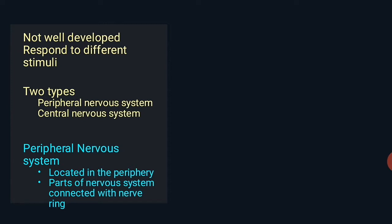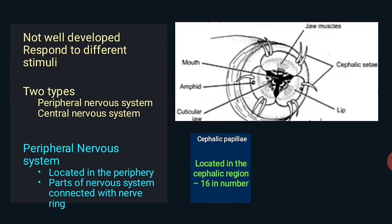Let's see about the peripheral nervous system. As the name itself suggests, they are located in the periphery of the nematode body. They are part of the nervous system connected with the nerve ring. Let's see about the various sense organs associated with the PNS — first, cephalic papillae.